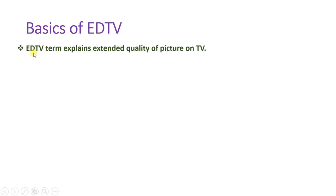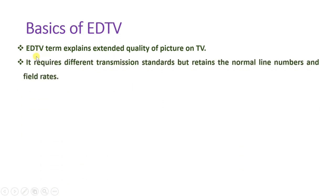In the pattern of video format, previously there was interlace scanning happening in the television system. But after Extended Definition Television, there was a change from interlace to progressive scanning. In EDTV, we do not have interlace scanning — we have progressive scanning. It requires a different transmission standard but retains the normal number of lines and field rate, as in PAL and NTSC systems. We provide extended quality by having progressive scanning.